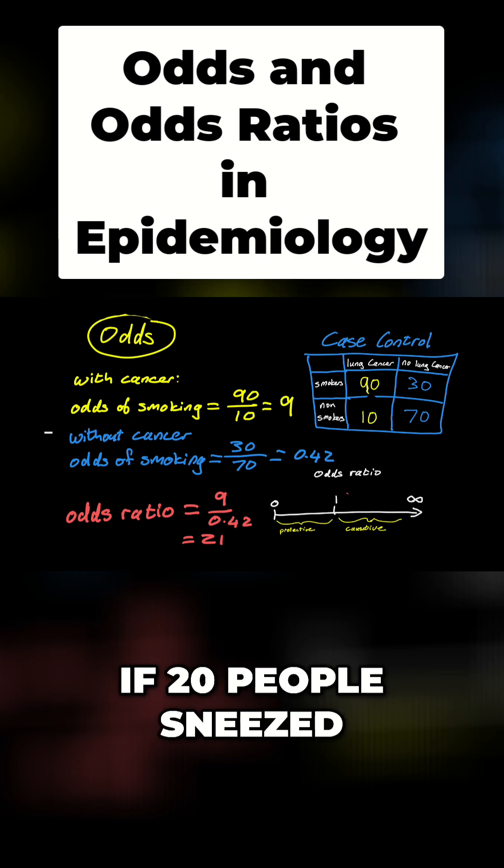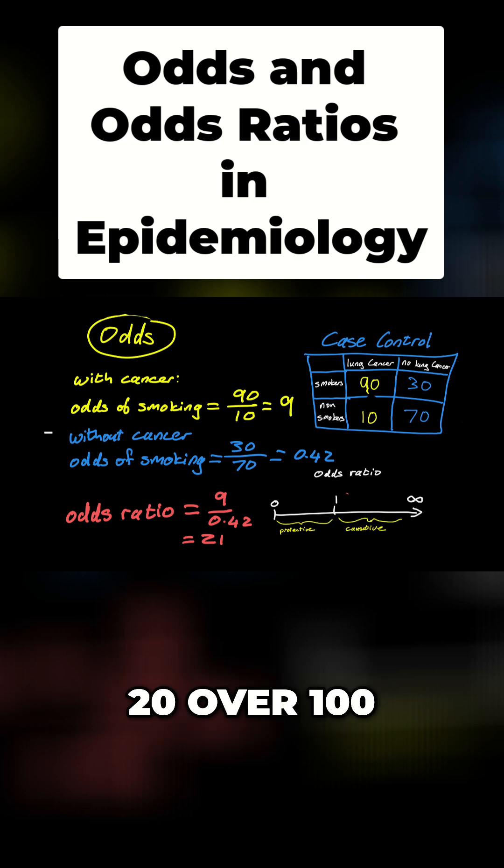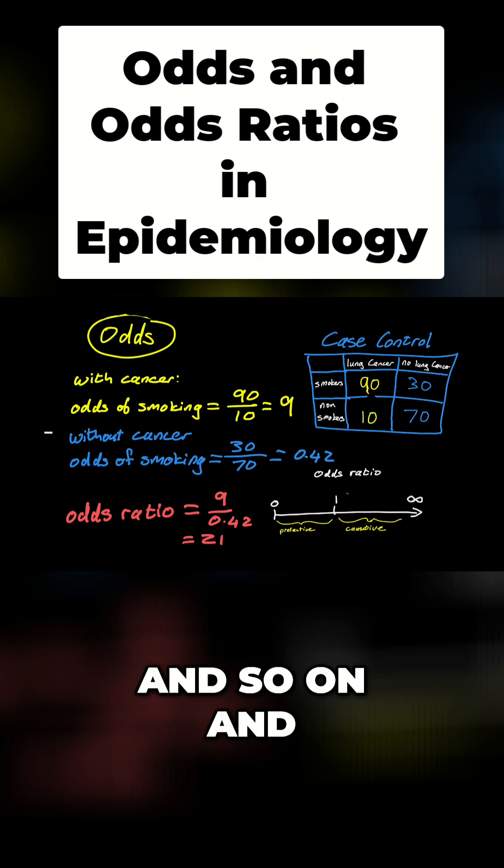However, if 20 people sneezed, the risk would be 20 over a hundred, but the odds would be 20 over 80. You see the difference.